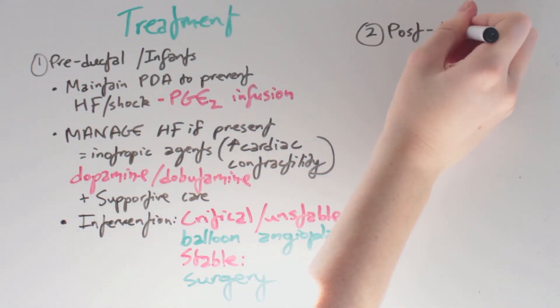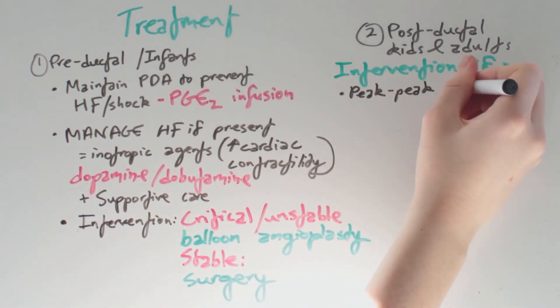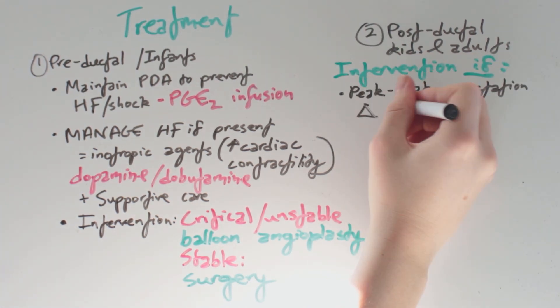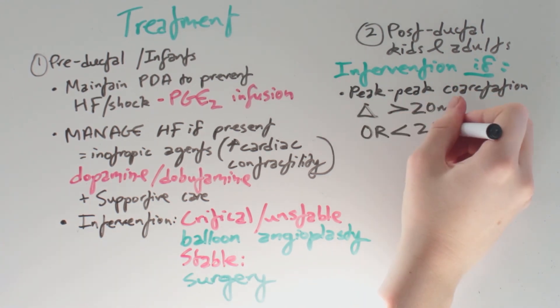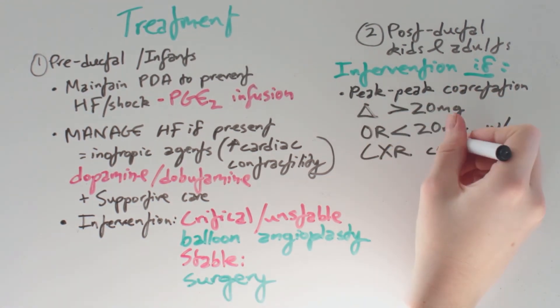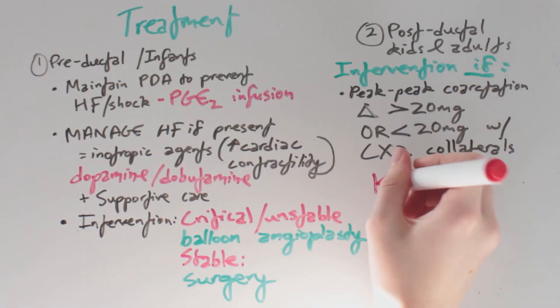In post-ductal coarctation, we should intervene if the peak-to-peak coarctation gradient—that is, the pressure difference across the coarctation—is greater than 20 millimeters of mercury, or where it is less than 20 millimeters of mercury with evidence of collateral circulation on chest x-ray.